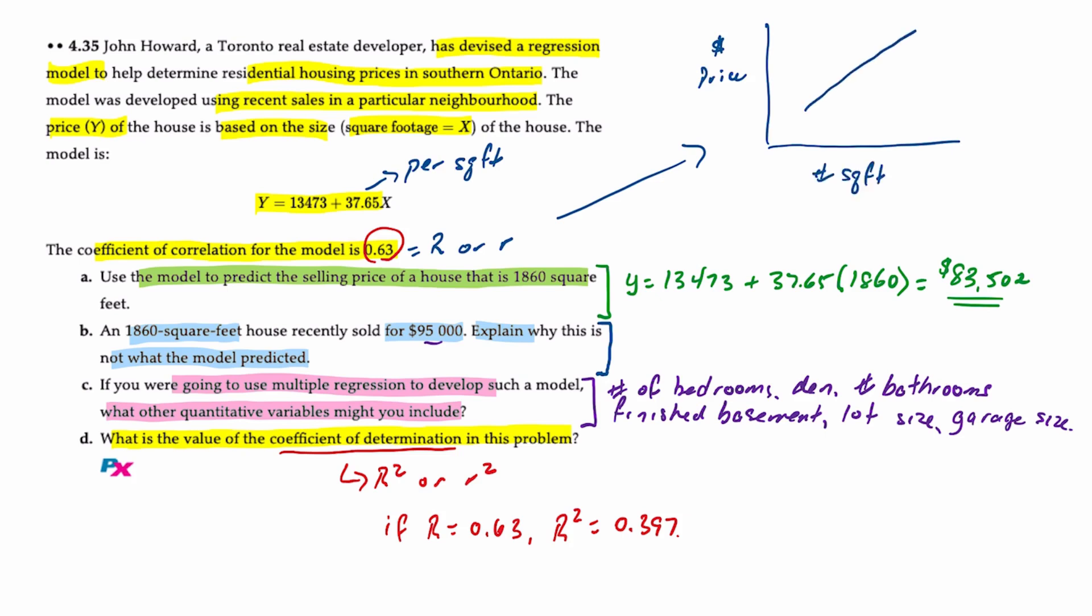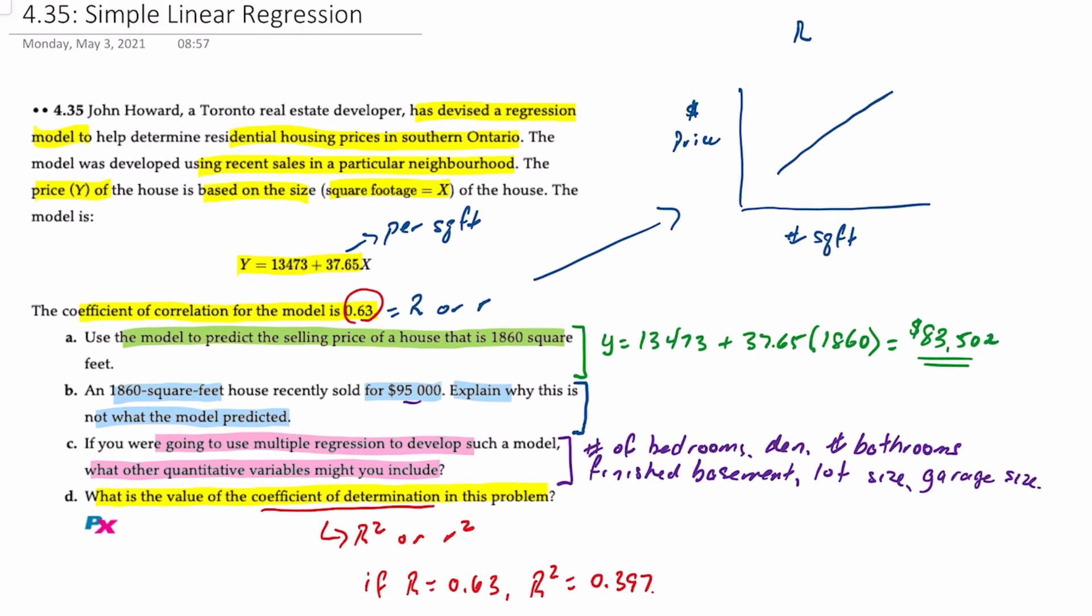And that the model may look something like this: that it's positive means it's upward sloping. And remember that R ranges between negative one and positive one, indicating either perfect negative or perfect positive correlation. Here R is 0.63, so it's not perfectly positive correlation, but it's fairly strong.